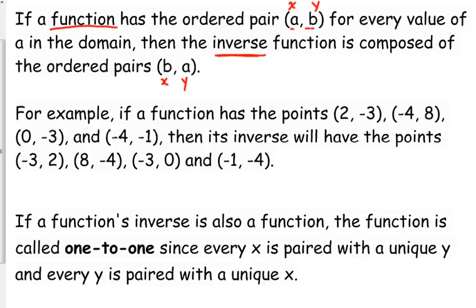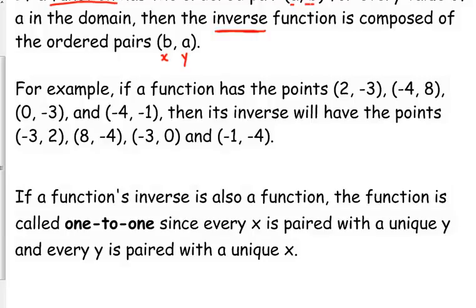We have a special type of function that if its inverse is also a function, meaning it passes the vertical line test, because sometimes inverse functions are not actually functions because they don't pass the vertical line test. But if a function and its inverse are both functions, then it's called one-to-one because that means every x has only one y and vice versa. Every y has only one x.